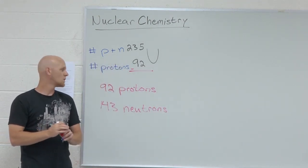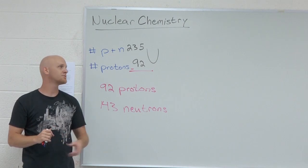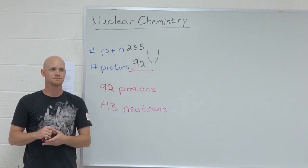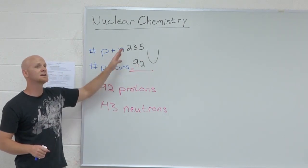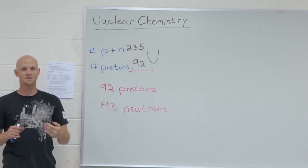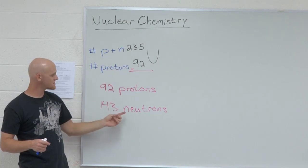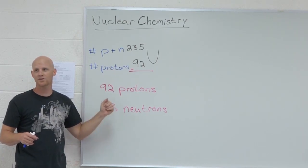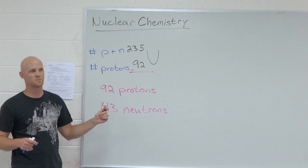So notice which one of these numbers is fixed for uranium. Protons. The atomic number, the number of protons, is a set number for a given element. So you change that, you've actually changed the element. But the neutrons, you can change the number of neutrons, and it's still the same element, but it'll be a different isotope.